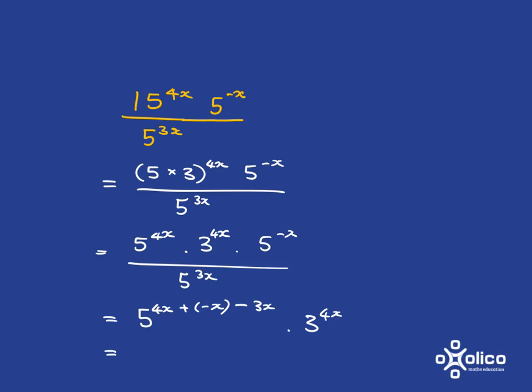So we get 5 to the 4x plus negative x and then subtract 3x, and that 3 to the 4x we can do nothing with. And 4x subtract x gives me 3x. Subtract 3x gives me 0. So I get 5 to the 0 times 3 to the 4x, and 5 to the 0 is 1.